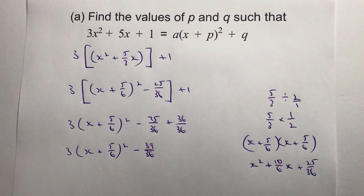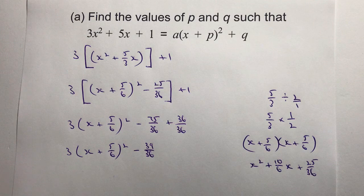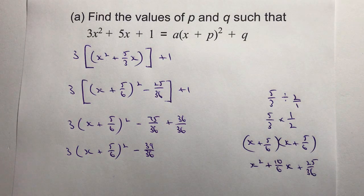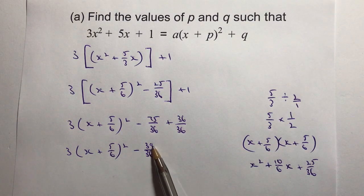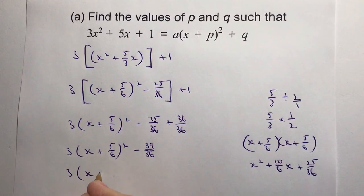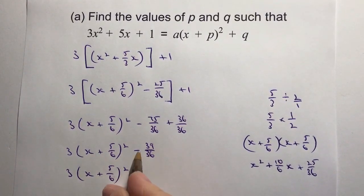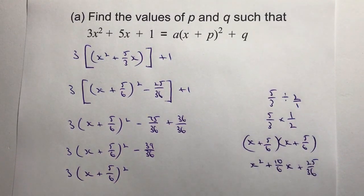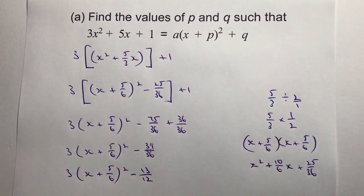I hope you're following how I'm working with these fractions. You could try doing this as decimals, but I think it's probably a little bit easier to deal with fractions once you've got those techniques in place. The only thing to consider at the end is that you can cancel this fraction down. So I can write that as 3 times x plus 5 over 6 squared, and rather than minus 39 over 36, I'm going to write that as minus 13 over 12. That's pretty much it for this type of question.